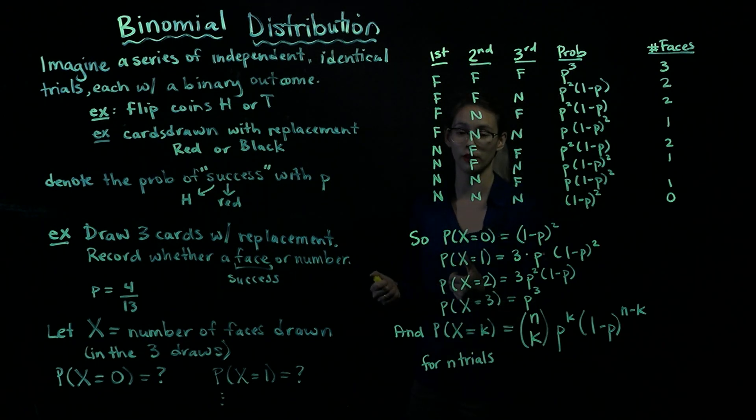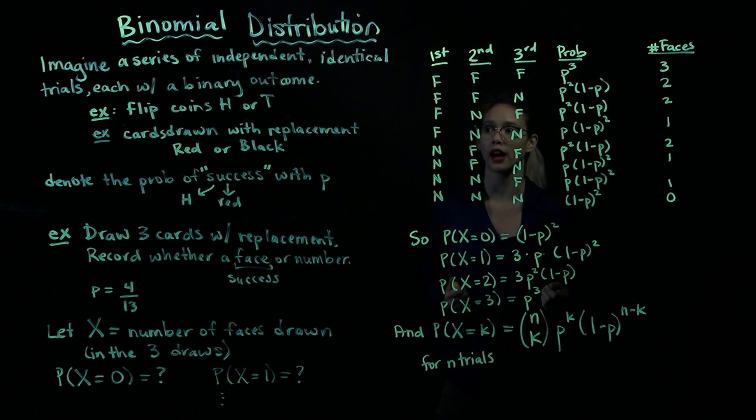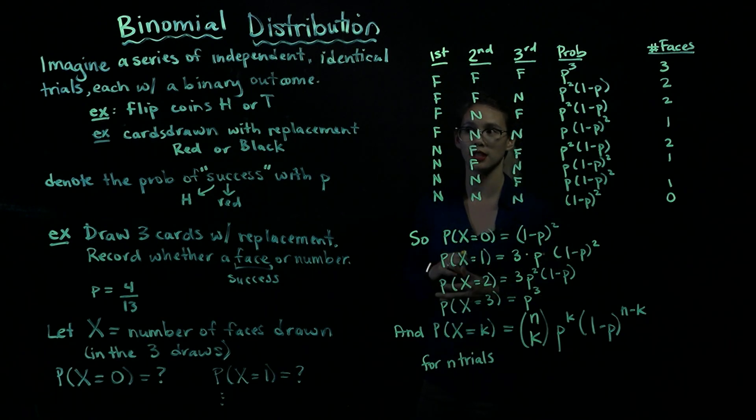So for example, we could think about coin flips. Each coin flip would be one trial, and each trial has two outcomes. You could have a heads or a tails, or a different example of a binomial would be drawing cards with replacement. When you draw a card, it could either be a red card or a black card, so it has these two different options.